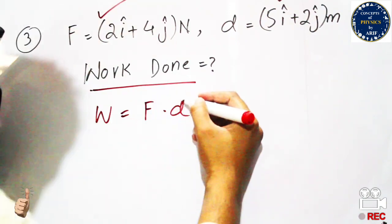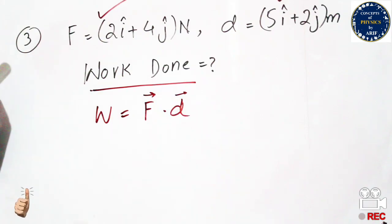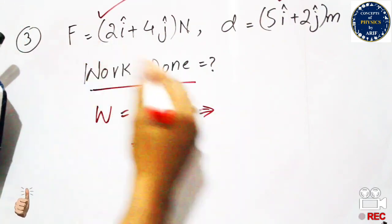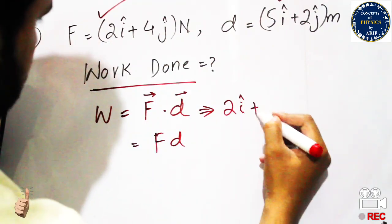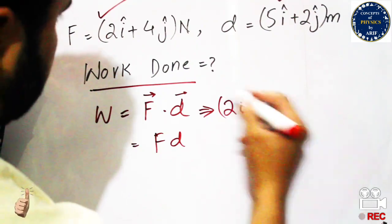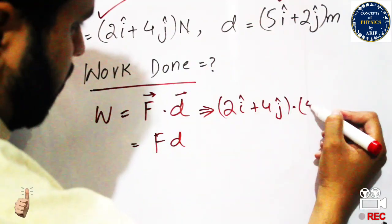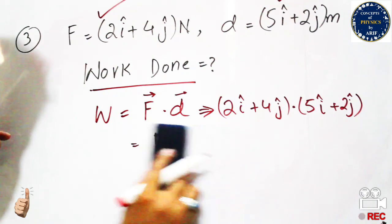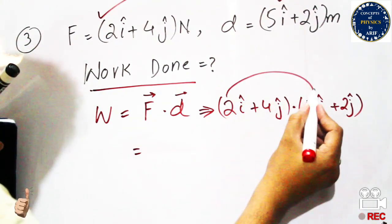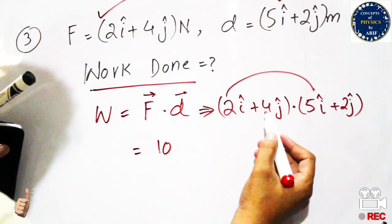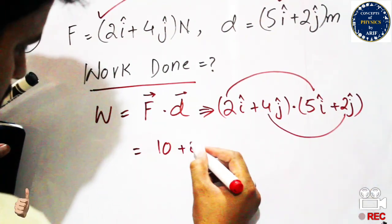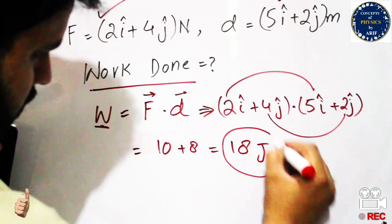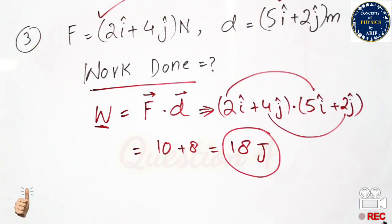Taking the dot product of force (2i + 4j) N and displacement (5i + 2j): in the dot product, i-components multiply with i-components and j-components with j-components. So 2×5 = 10, plus 4×2 = 8. The final answer is 18 Joules.